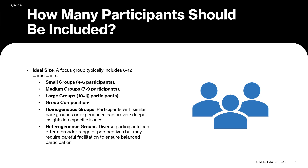How many participants should be included in a focus group? The ideal size is typically six to 12 participants. A small group of four to six is useful for exploring complex topics where each participant needs more time to express their views. A medium group of seven to nine provides a balance between individual expression and group interaction. A large group of 10 to 12 is good for generating a broad range of ideas, but may require more skilled moderation to manage the discussion.